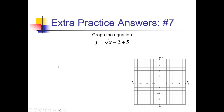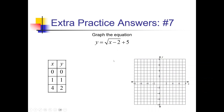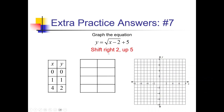For this square root function, the minus 2 inside means we are shifting right 2; plus 5 outside means up 5. So x plus 2 and y plus 5. Adding 2 to all x values: 2, 3, and 4 plus 2 is 6. Adding 5 to all y values: 5, 6, and 2 plus 5 is 7. On the graph: (2, 5) is our endpoint, then (3, 6) and (6, 7). Draw the square root through those points.